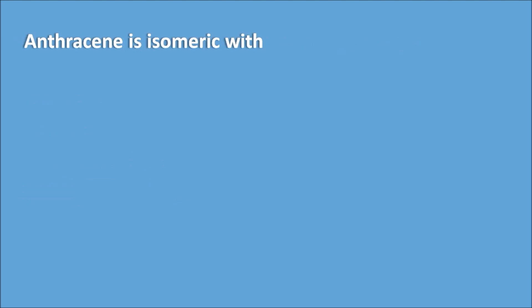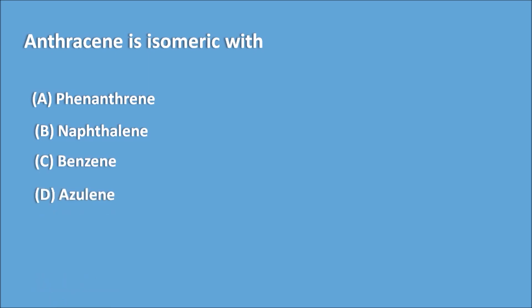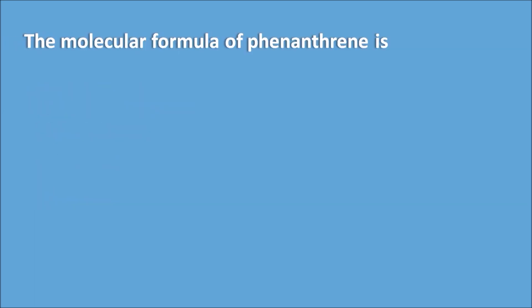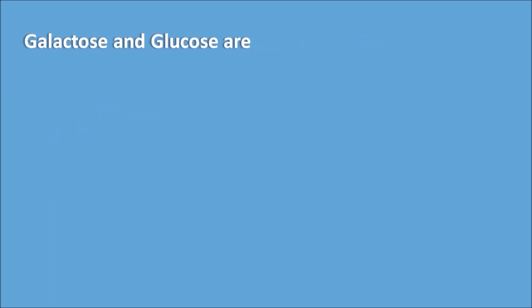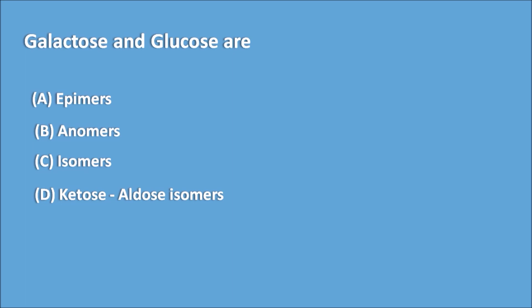Anthracene is isomeric with: (a) Phenanthrene, (b) Naphthalene, (c) Benzene, (d) Azulene. Answer: Anthracene is isomeric with Phenanthrene. The molecular formula of Phenanthrene is: (a) C₁₄H₁₀, (b) C₁₂H₁₀, (c) C₁₄H₁₄, (d) C₁₄H₁₈. Answer: C₁₄H₁₀. Galactose and Glucose are: (a) Epimers, (b) Enantiomers, (c) Isomers, (d) Ketose-Aldose isomers. Answer: Epimers.